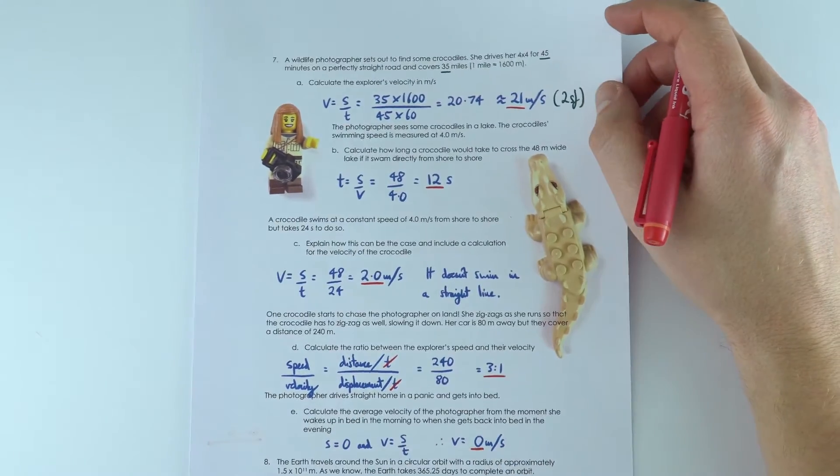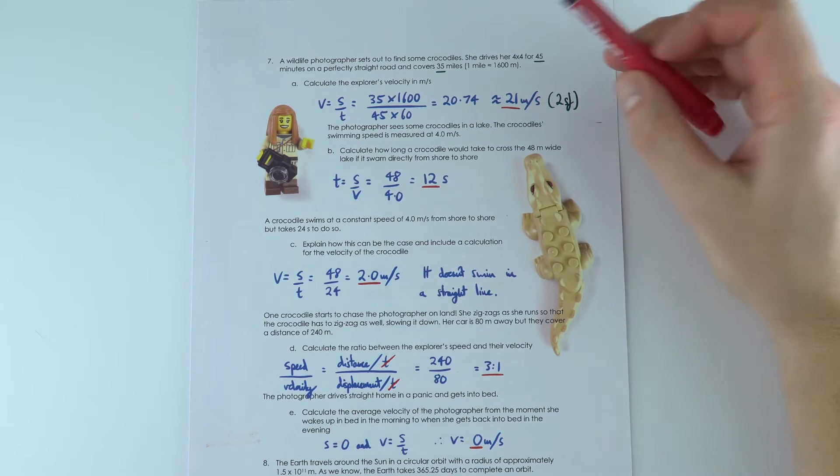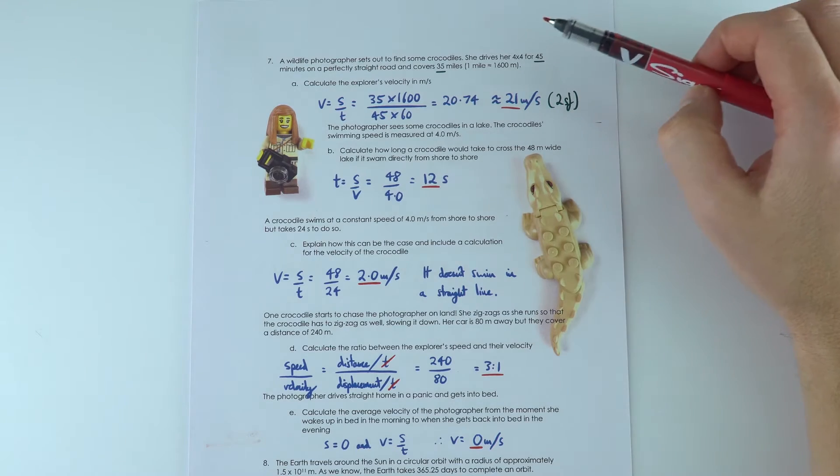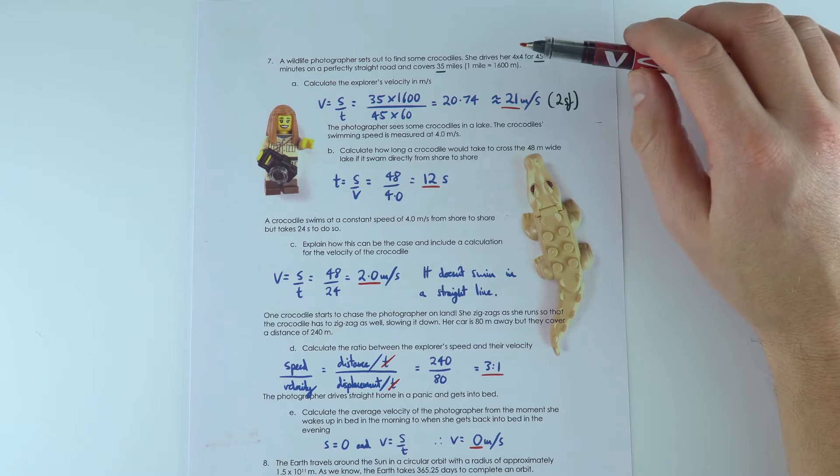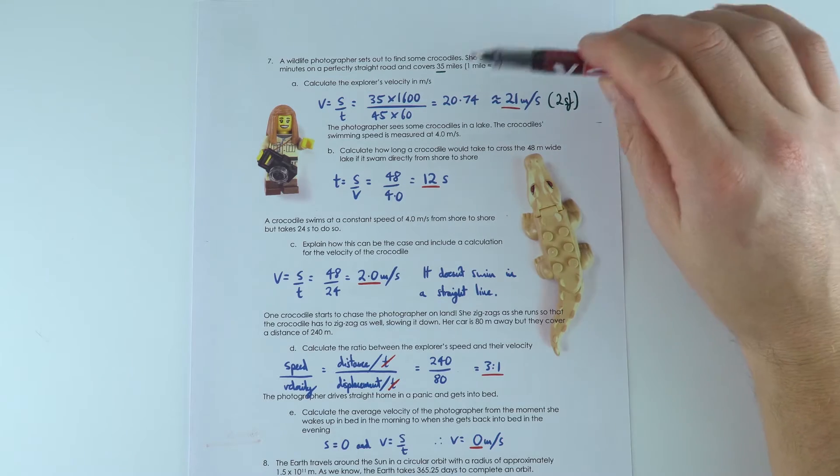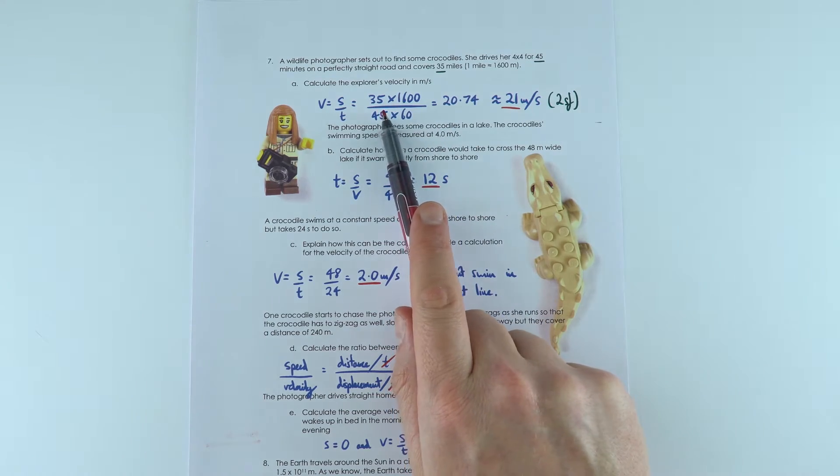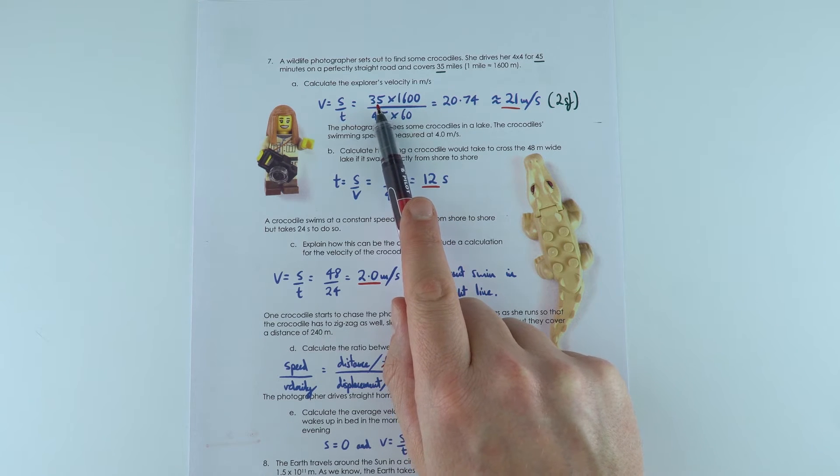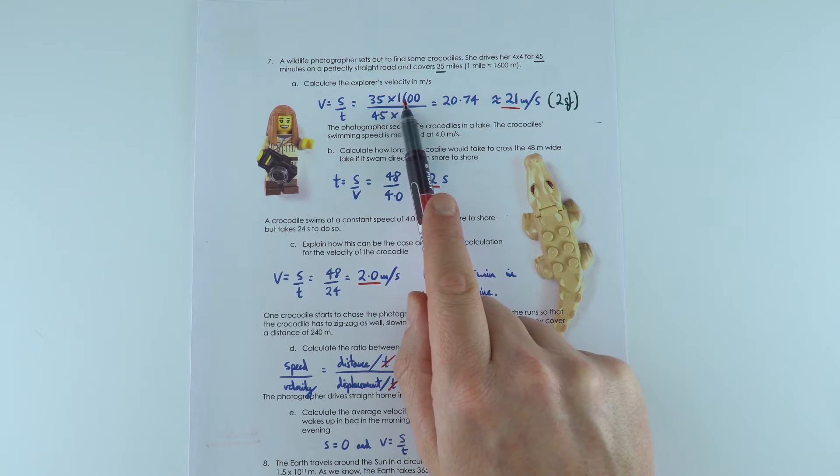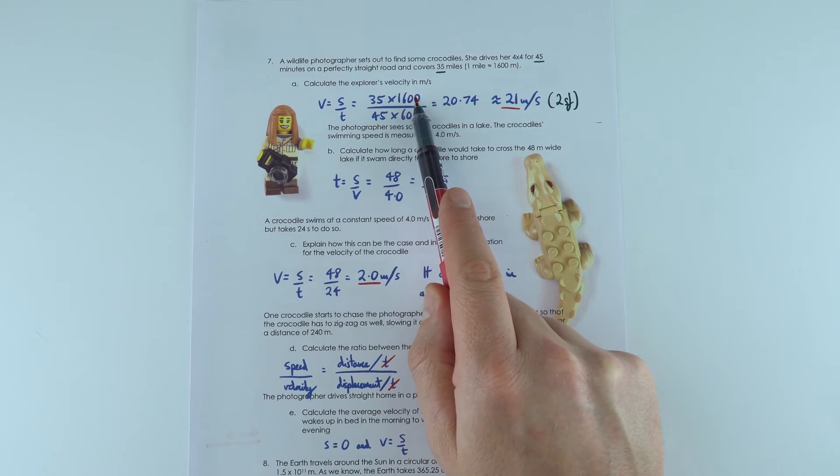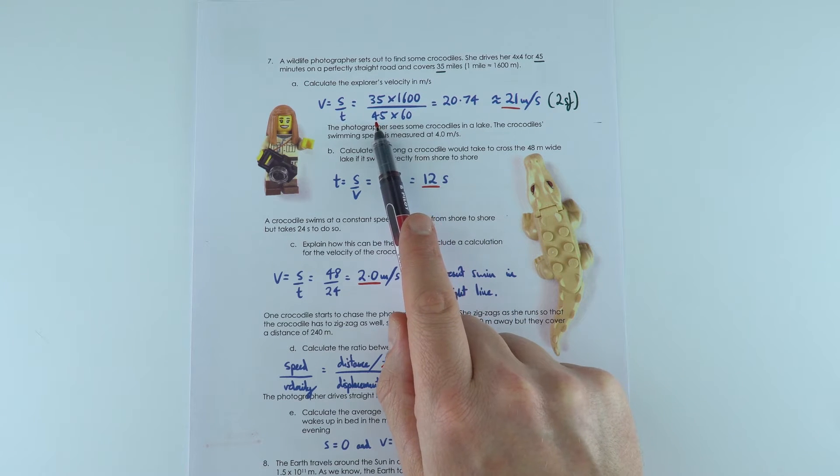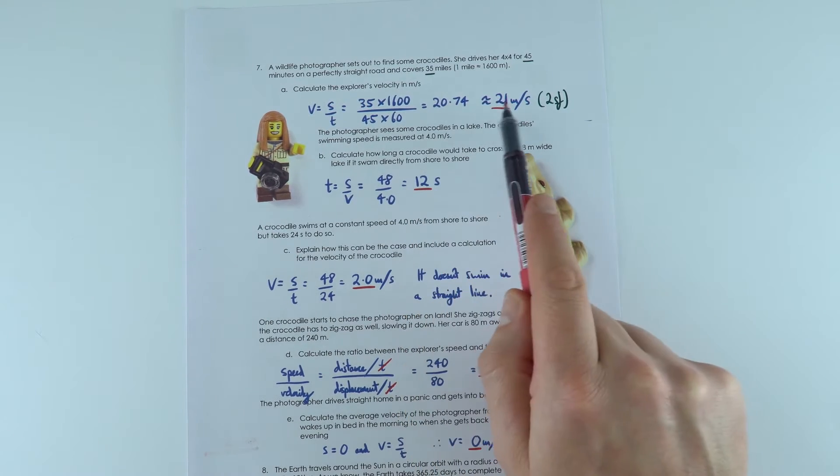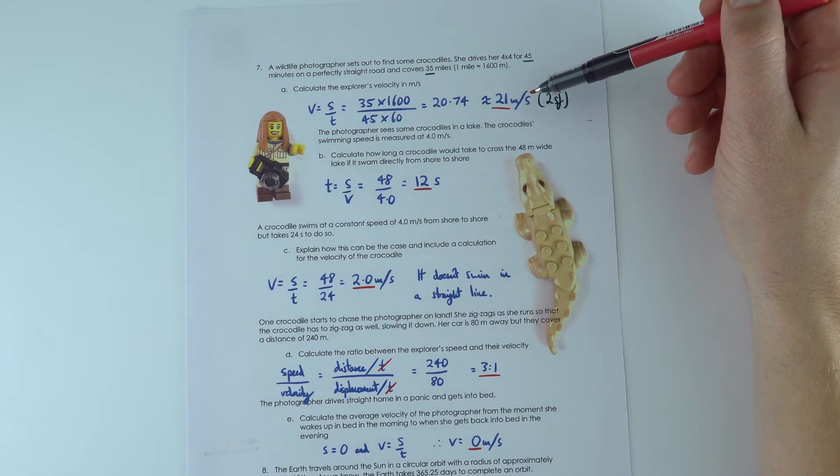The next question about a wildlife photographer. Fairly straightforward. Again, you've just got to make sure you convert from minutes into seconds and miles to meters and so on. So what's their velocity? Well, they go 35 miles times 1600 to get it into meters, divided by their time of 45 minutes times 60 to get into seconds, to give their velocity as 21 meters per second.